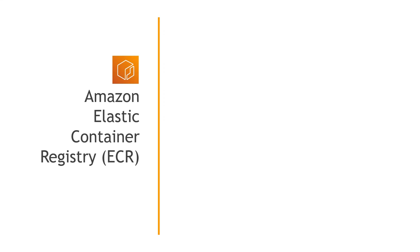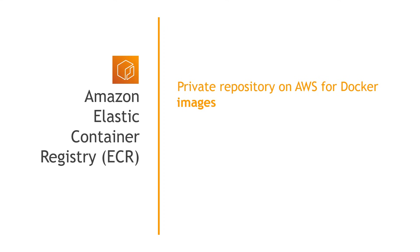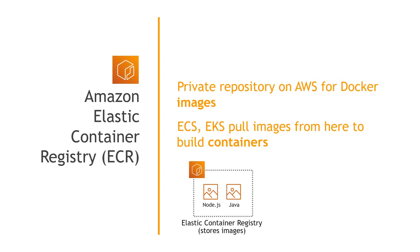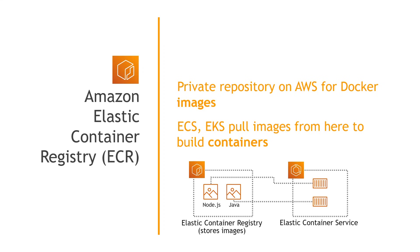And then finally, we have the Elastic Container Registry or ECR. This is essentially where you store your Docker images. Remember that images are basically templates or blueprints that the containers are built on. So you create the image, you store it in ECR, and then the Elastic Container Service or Elastic Kubernetes Service pulls the image from the repository and builds containers from it. So something like this: you have your images built and stored in the Elastic Container Registry — maybe one for Node and one for Java — and then the Elastic Container Service, when it needs to build a container, grabs the image from ECR and creates that container from it.